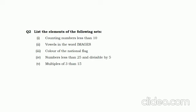(3) Colors of the national flag — as we know, the colors of the national flag are white and green. (4) Numbers less than 25 which are divisible by 5 — these are 5, 10, 15, and 20. (5) Multiples of 3 less than 15 — you write the table of 3; the elements are 3, 6, 9, and 12, which are less than 15 and multiples of 3.